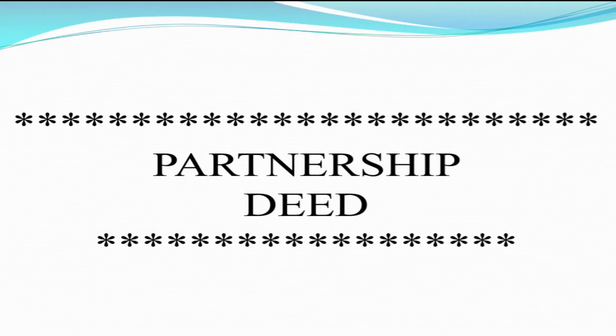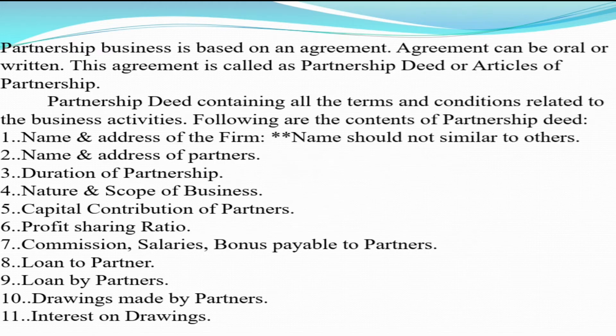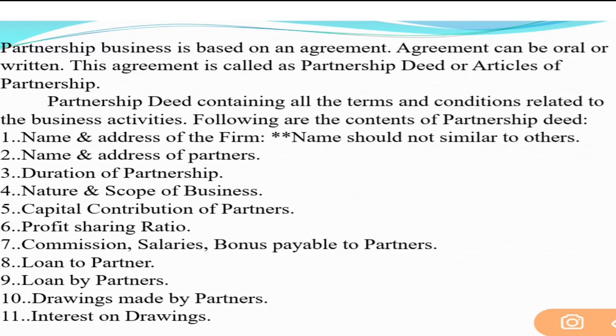We have already discussed partnership business — its features, types of partners, and related aspects. The foundation of a partnership business is the partnership deed. When we explain partnership business, we say partnership is a contractual relationship between the partners, and that contractual relation is what we call the partnership deed. This agreement can be oral and written, and is also called articles of partnership.